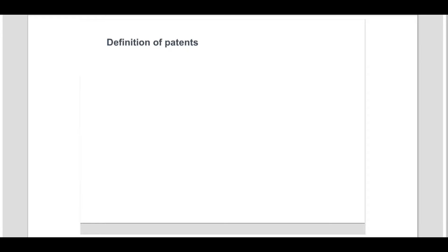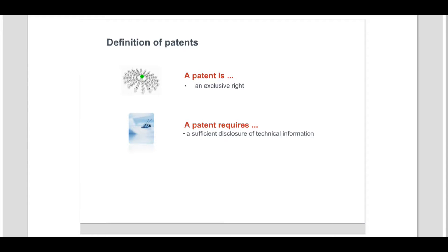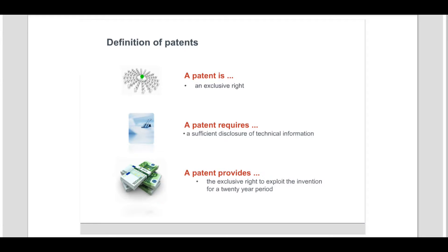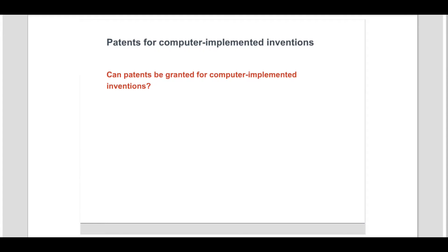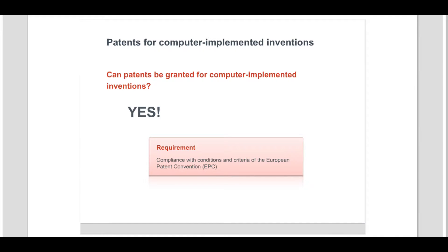Let us briefly consider what patents are and why applicants apply for them. A patent is an exclusive right that is granted in return for the disclosure of technical information. The applicant is required to disclose his invention so that it can be carried out by the skilled reader. The exclusive right granted to the applicant gives him the right to control the way the patented invention is exploited for a 20-year period. Patents are granted by the European Patent Office for computer-implemented inventions if they satisfy the conditions and criteria of patentability laid down in the European Patent Convention.